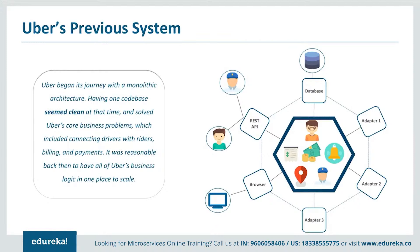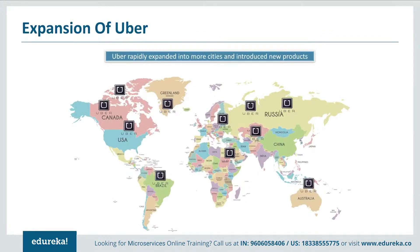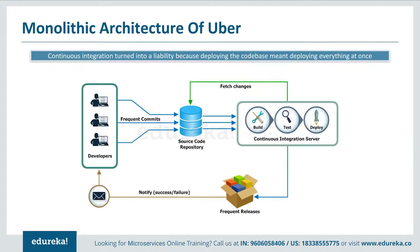In the monolithic setup, all features — passenger management, billing, notification, trip management, and driver management — were composed in a single framework. Having one codebase seemed clean at the time and solved Uber's core business problems, including connecting drivers with riders, billing, and payments. But as Uber started expanding worldwide into many more cities, it continuously faced problems of scalability and continuous integration. Developers could not continuously build, test, deploy, and release software frequently as Uber expanded city-wise. Adding new features and fixing bugs in a single repository became extremely difficult.